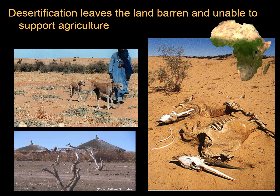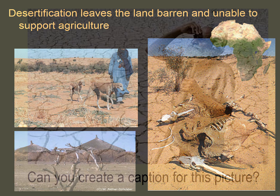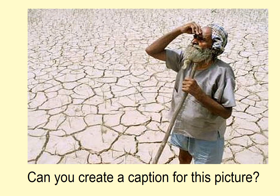The fact of the matter is, desertification is one of the worst environmental catastrophes that can befall human beings. When your land becomes desert, it's barren and unable to support agriculture — devastating for human communities because that takes away your available supply of food. I want to leave you today with this picture. Take a look at it and see if you can create some sort of caption to help capture this moment.